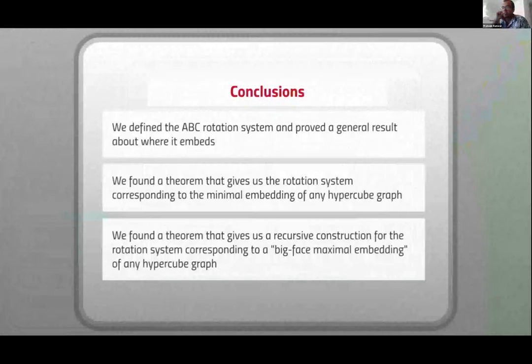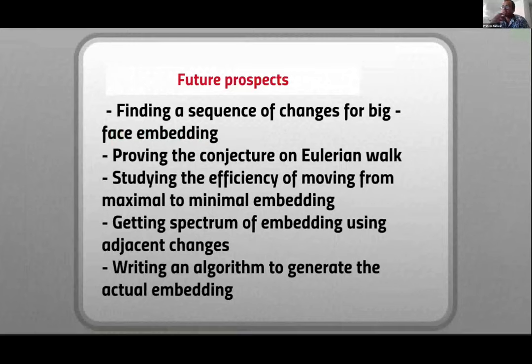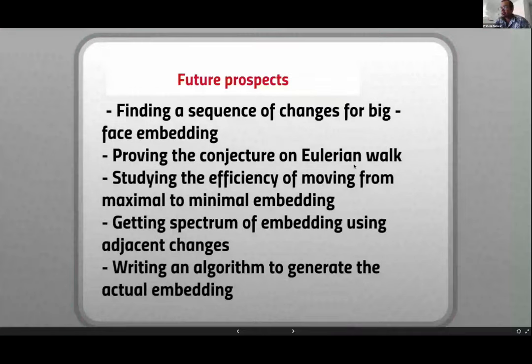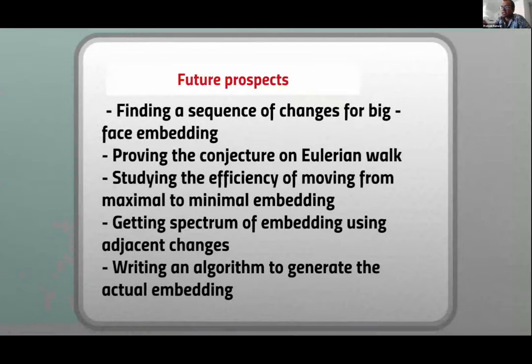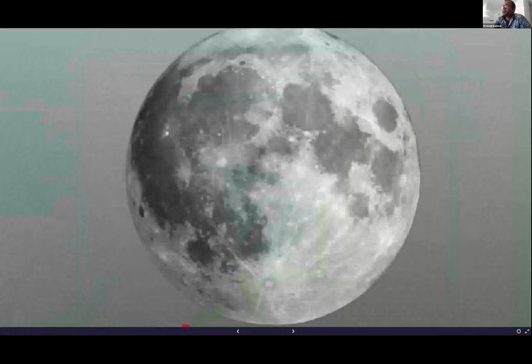That's the end. We defined the ABC rotation system, basically construction of minimal embedding and maximal embeddings. I could find a sequence of changes for Q4 to go from minimal to maximal. Open question is, how do you do that for every QN? Is there a certain method of doing that? One thing I didn't talk about is there is a particular embedding that I found which consisted of two elements which combined gave you Q4. What's the minimum number of changes to go from minimal to maximal? What are the possible combination of face sizes that can be obtained for a particular graph? And an algorithm to see what the actual embedding looks like, because drawing it is a real pain. That's it. Thank you.